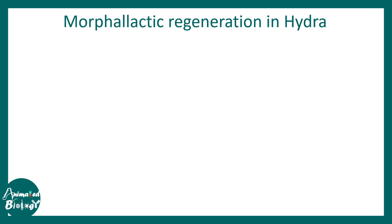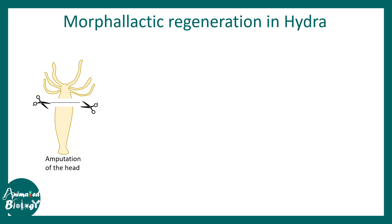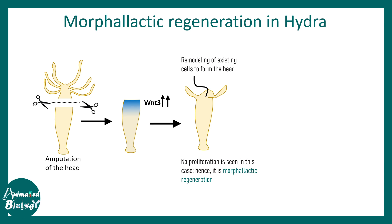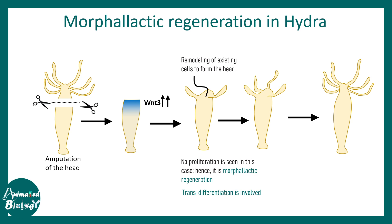Morpholactic regeneration can be understood by a simple experiment: the head of the Hydra is amputated, and we look at how the remaining body part regenerates a head. Just after amputation, underlying the injury site there is upregulation of a morphogen known as Wnt3, which belongs to the Wnt/beta-catenin signaling module. Wnt3 upregulation leads to remodeling of the existing cells — there is no proliferation involved — and hence this is morpholactic regeneration. It is trans-differentiation, not proliferation-based regeneration. Eventually this region remodels and forms the tentacles and head of the Hydra.